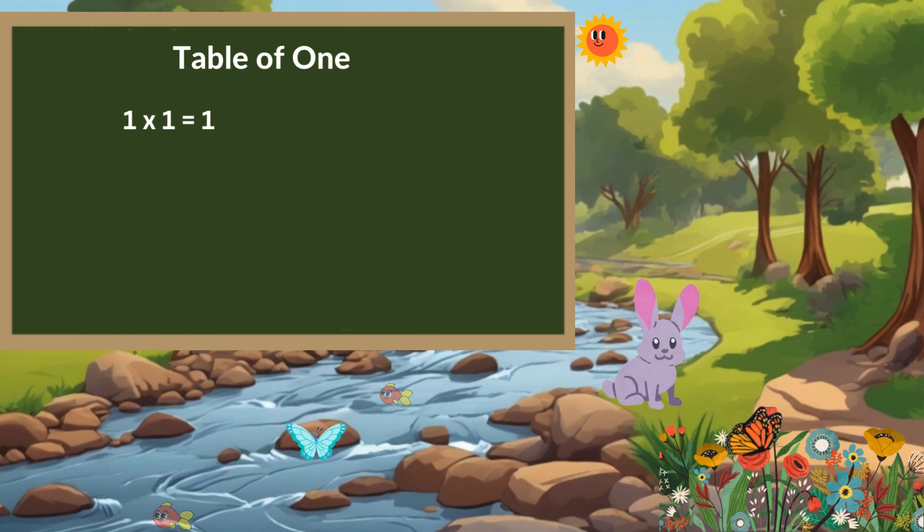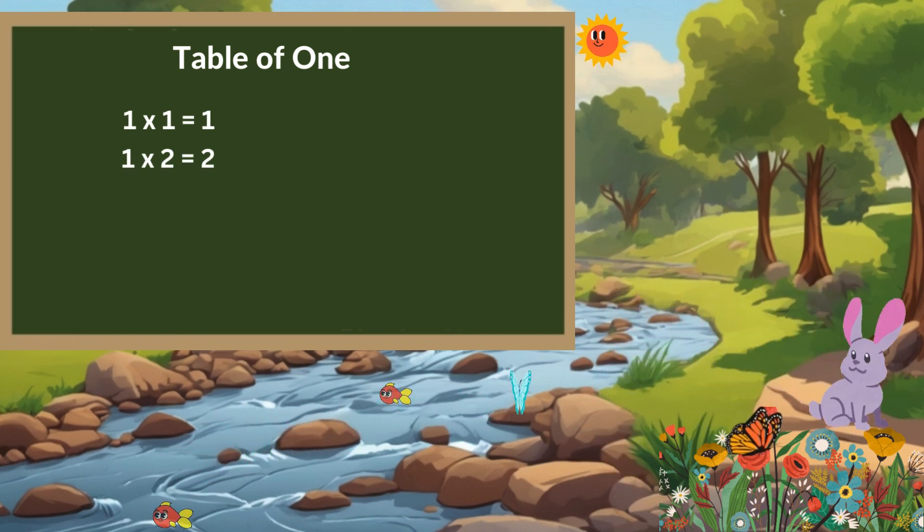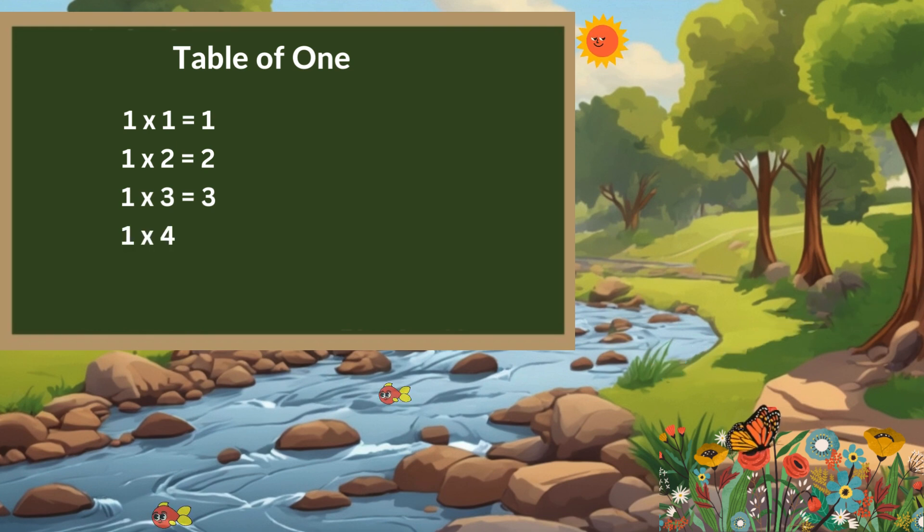1 times 1 is 1, 1 times 2 is 2, 1 times 3 is 3, 1 times 4 is 4, 1 times 5 is 5.